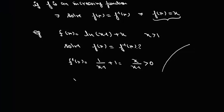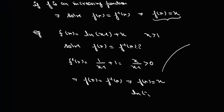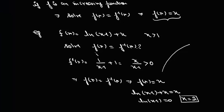So in this case the roots of the equation f(x) equals f inverse of x will be the same as roots of the equation f(x) equals x. We are given f(x) equals log(x minus 1) plus x when x is greater than 1. So basically we will have log(x minus 1) plus x equals x, which gives 0, so x is equal to 2. This equation f(x) equals f inverse of x will have one solution, x equals 2.